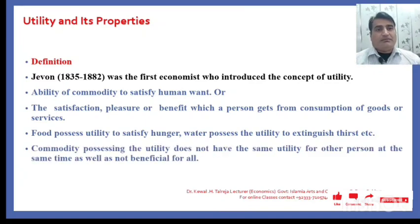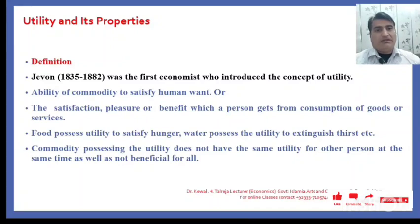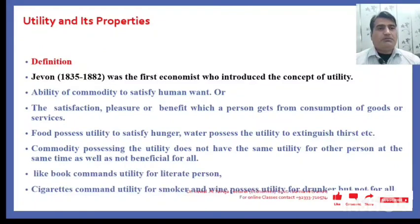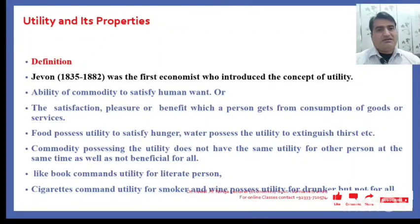Remember that a commodity possessing utility does not have the same amount of utility for every person at the same time, and will not be beneficial for all. For example, a book commands utility for a literate person, but there would be no utility for an illiterate person. Likewise, a cigarette has utility for a smoker but not for a non-smoker, and wine possesses utility for a drinker, not for all.